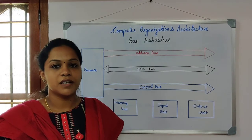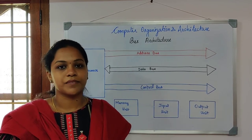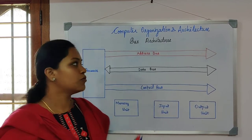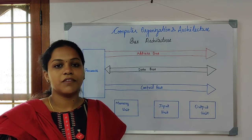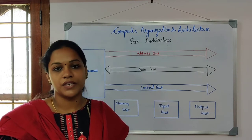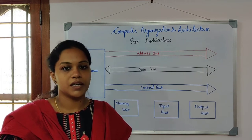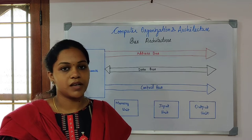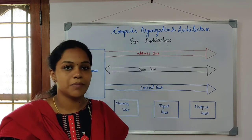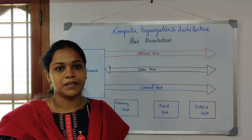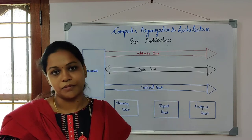Hi all, welcome to the third lecture on computer organization and architecture. Today we will be seeing about bus architecture. Before that we will brush up what we have seen in the past two lectures. In the first lecture we saw about von Neumann architecture or stored memory architecture, wherein we saw what are all the components present inside a computer system and the purpose of each and every component.